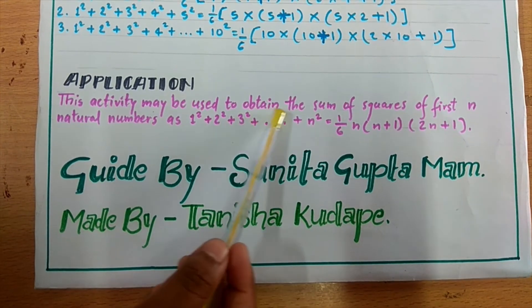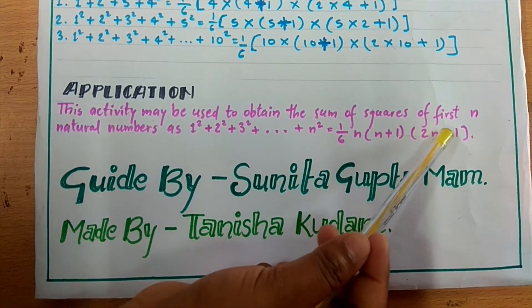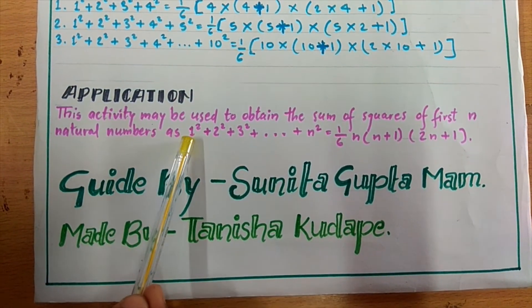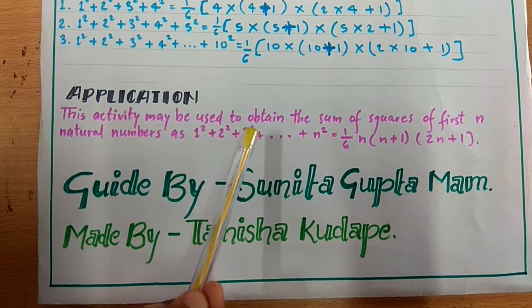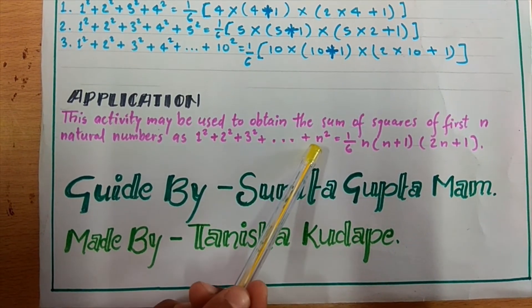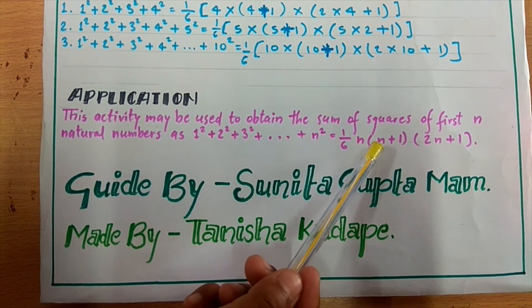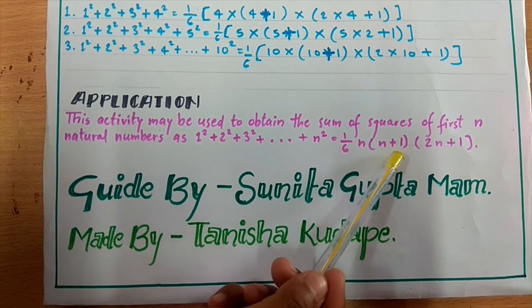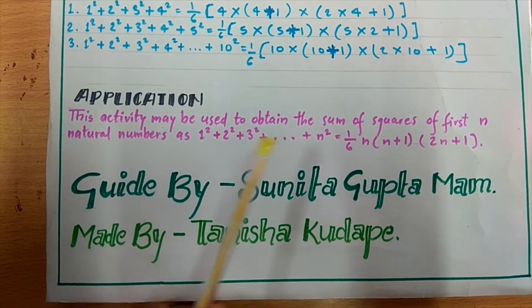And in general, the sum of squares of the first n natural numbers is equal to (1/6) into n into (n plus 1) into (2n plus 1).